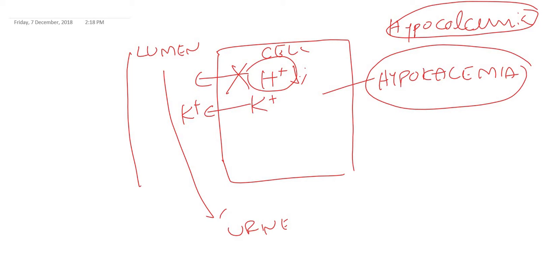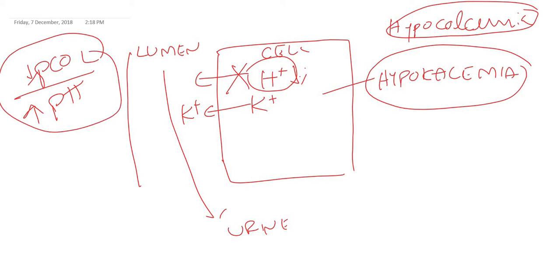To summarize: in respiratory alkalosis there is a decrease in partial pressure of carbon dioxide and an increase in pH. These are the important points to remember in respiratory alkalosis. Thanks for watching.